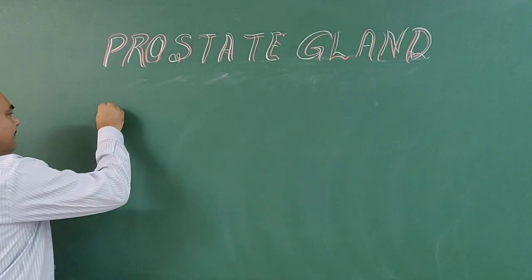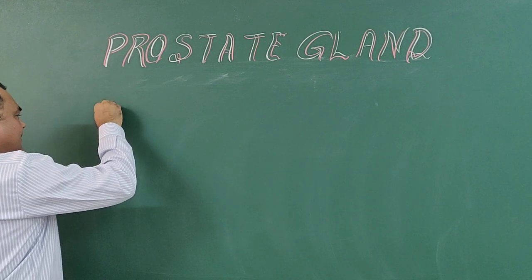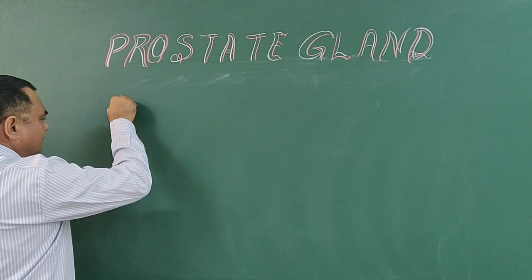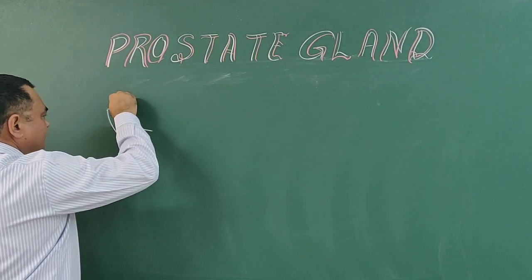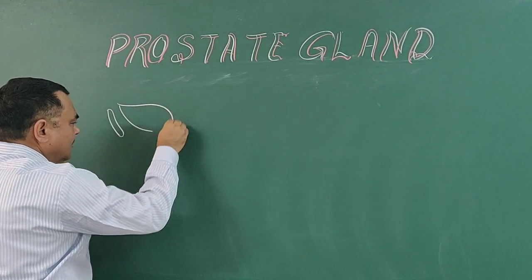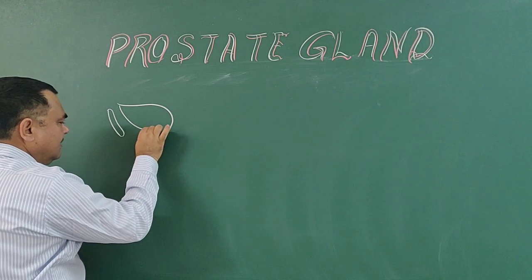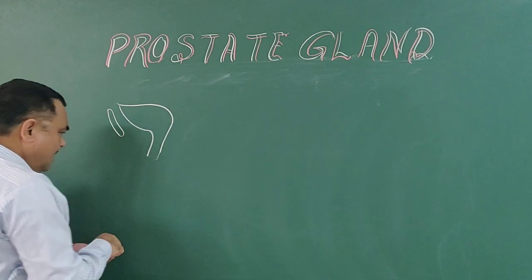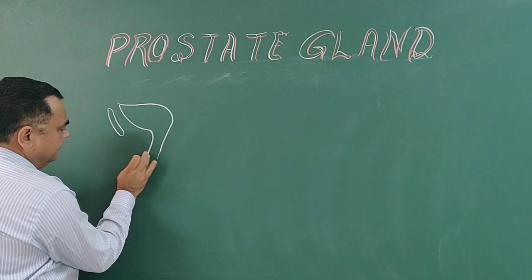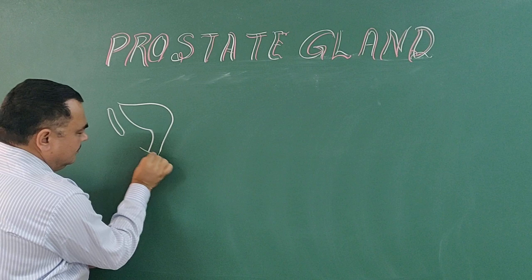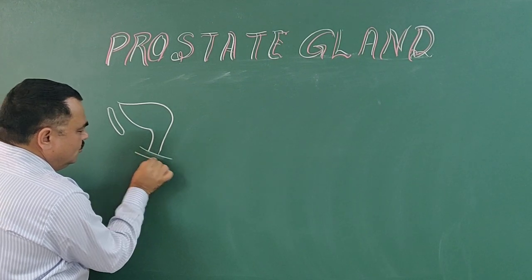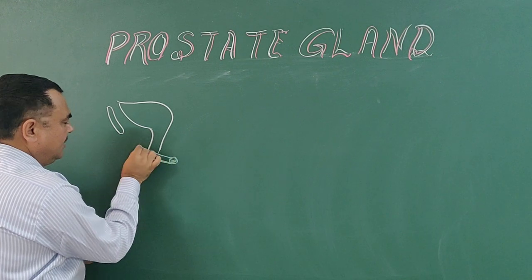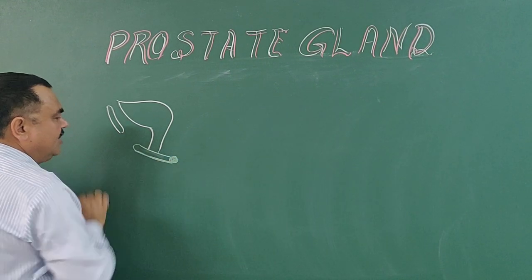If you make a diagram, this is the pubic bone. This is the urogenital diaphragm. And here is the positional reference. This is the perineal body. This is the urogenital diaphragm, and here is the perineal body.